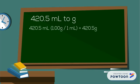Next, we convert 420.5 milliliters into grams. We know that 1 milliliter is equal to 1.00 grams. So we multiply 420.5 milliliters into 1.00 grams over 1 milliliter, which gives us an answer of 420.5 grams.